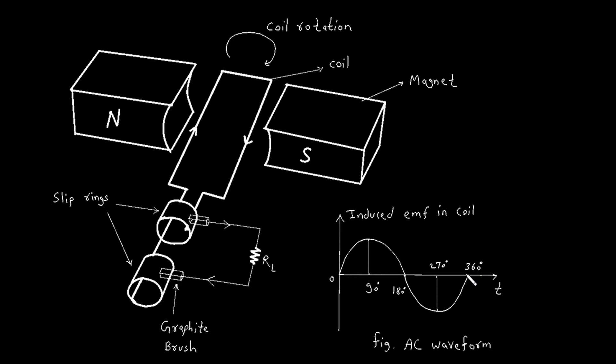Let's analyze the waveform in more detail. The horizontal axis of the waveform graph represents time or the angle of rotation of the coil, while the vertical axis represents the magnitude of the induced EMF. At zero degrees, the coil is parallel to the magnetic field, resulting in zero EMF.